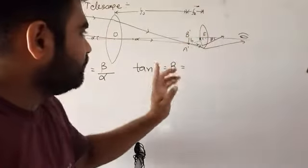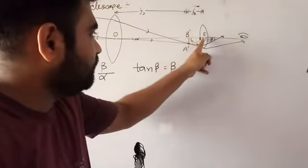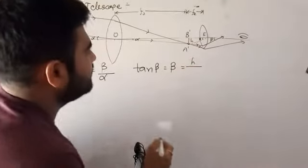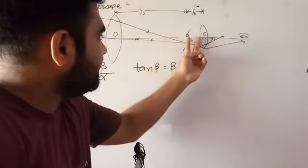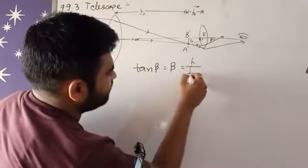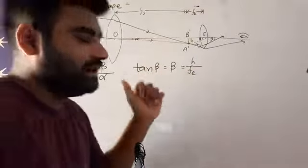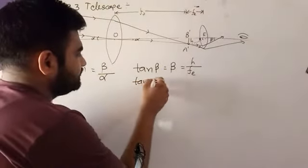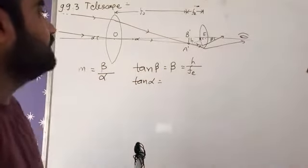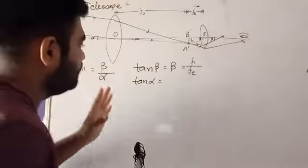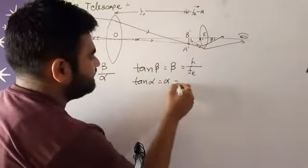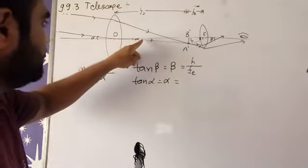So that's why here, a triangle is forming. So here this will also be beta. These two will be the same triangle, so beta is equal to opposite, that is h, upon this distance, that is fe. So h upon fe.